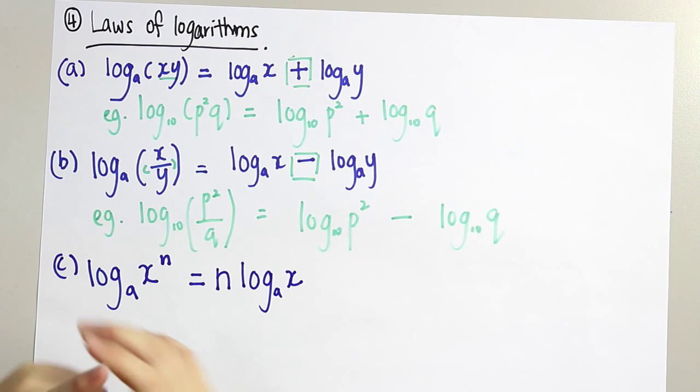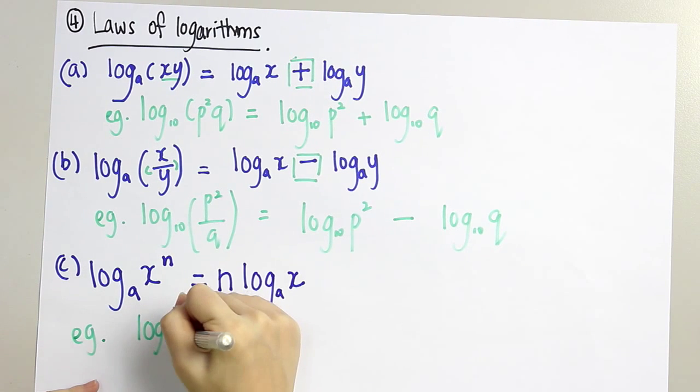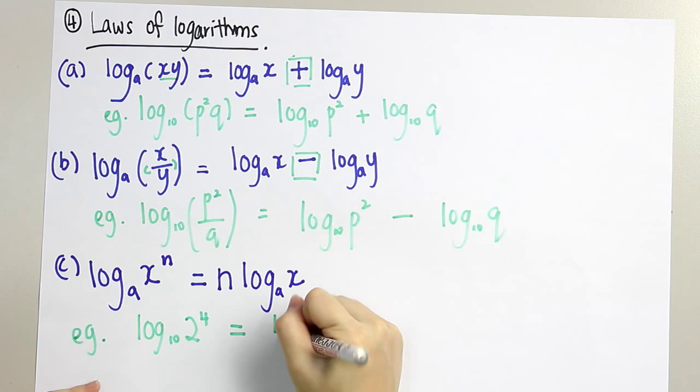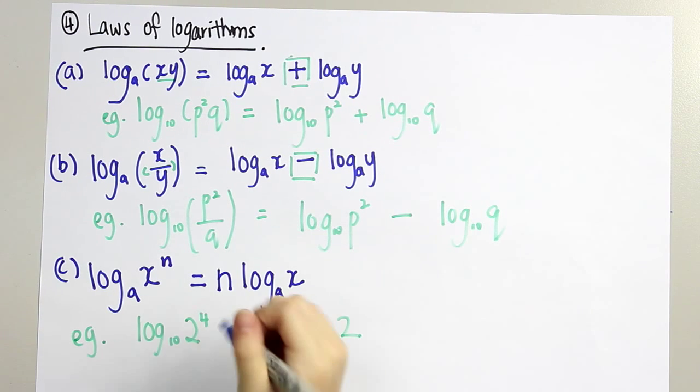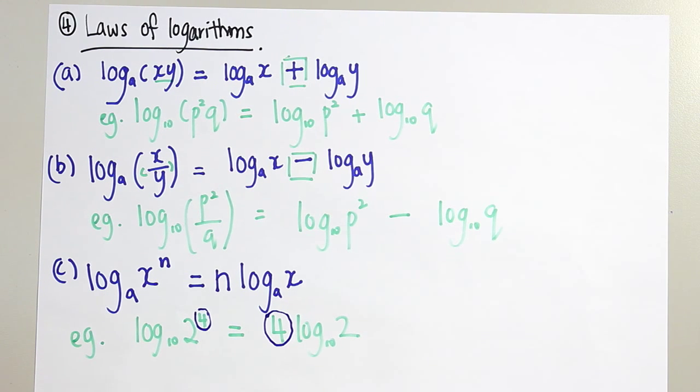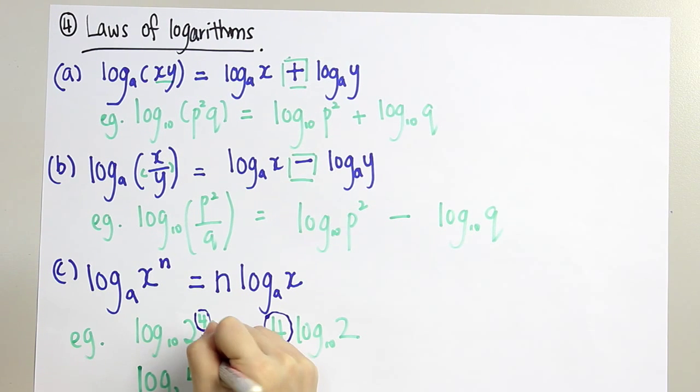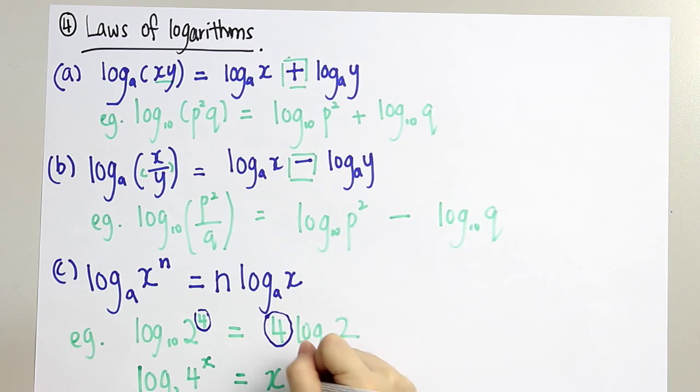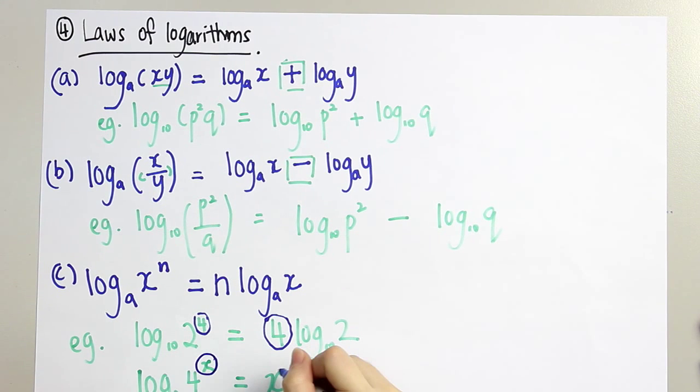So you can see a few examples. Log base 10 of 4 to the power of 2. It's actually 4 times log base 10 of 2. We control the power. We control this power to the front. Another example, we control the x to the front. So this is it. The power x will throw it to the front.